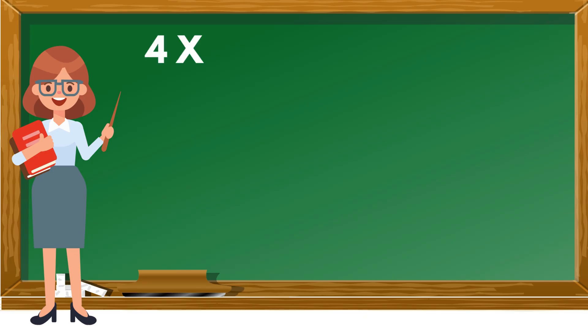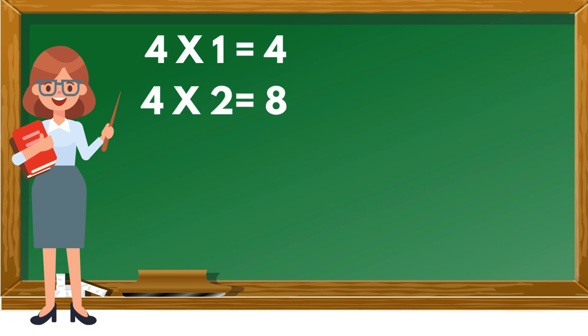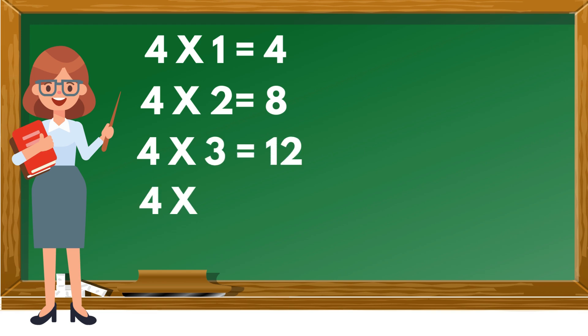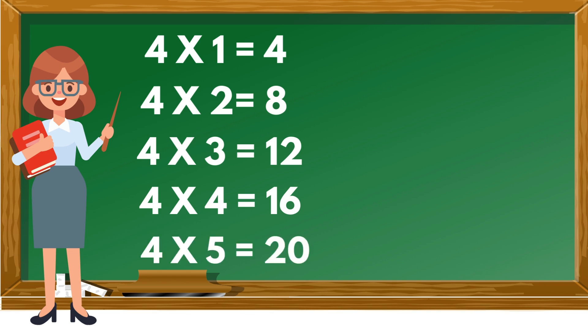Four ones are four. Four twos are eight. Four threes are twelve. Four fours are sixteen. Four fives are twenty.